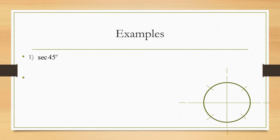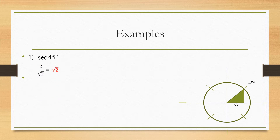Let's find secant of 45 degrees. We find where 45 degrees is on the unit circle — there's our triangle. Remember, secant is the inverse of cosine. Cosine is the adjacent side, which is radical two over two — but that's the answer for cosine. To get secant, we flip that to get two over radical two, then rationalize by multiplying top and bottom by radical two to get just radical two.